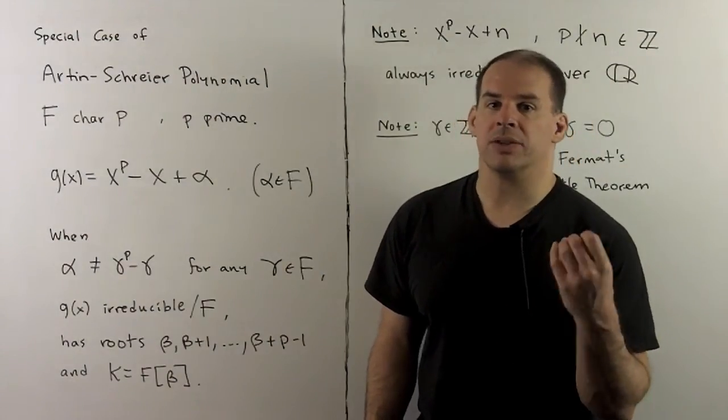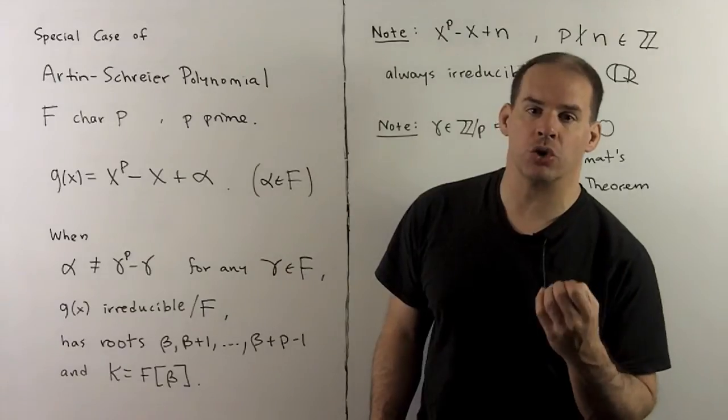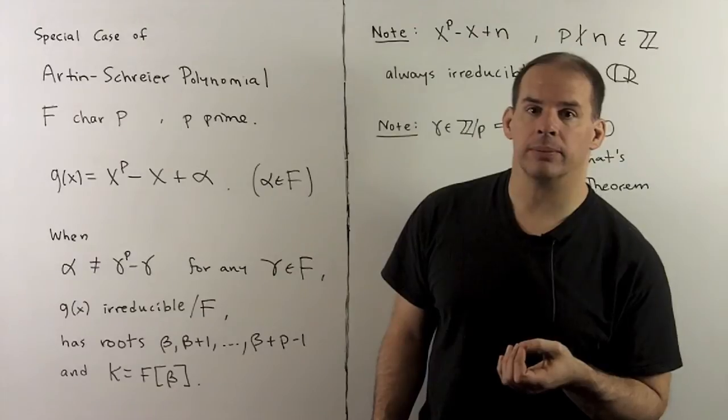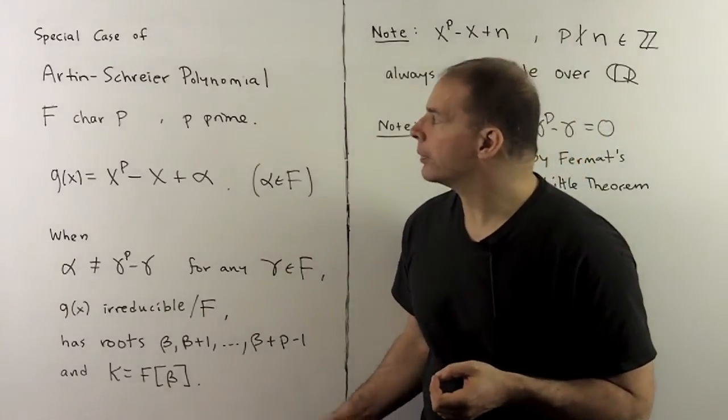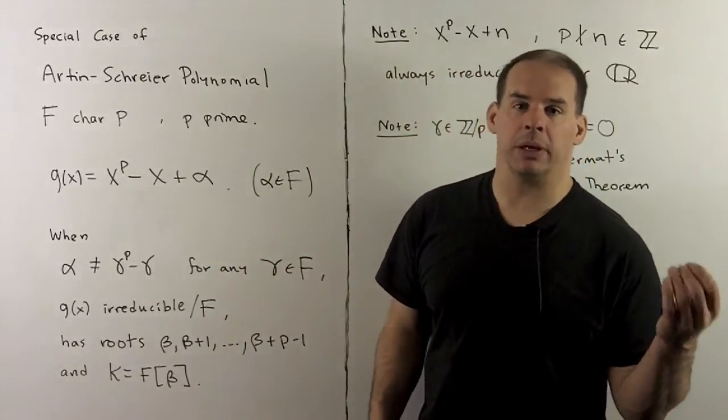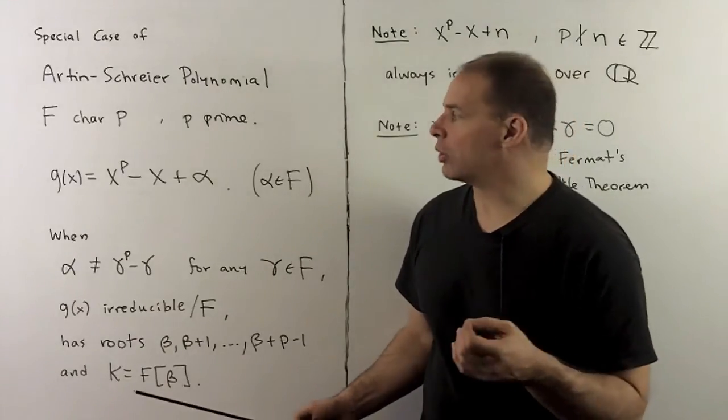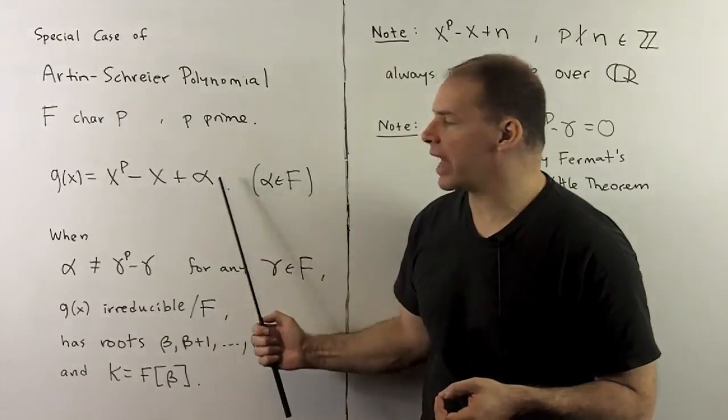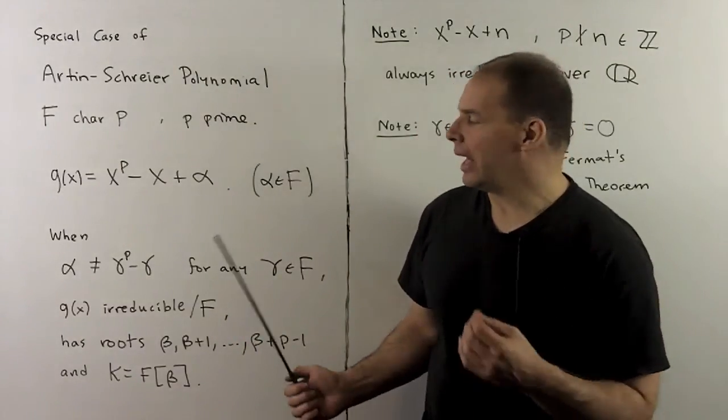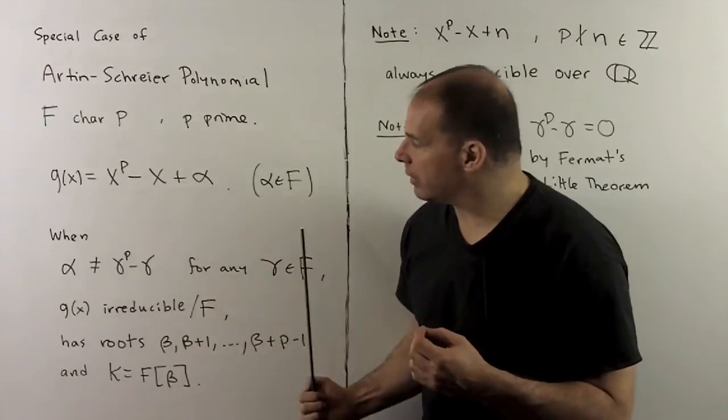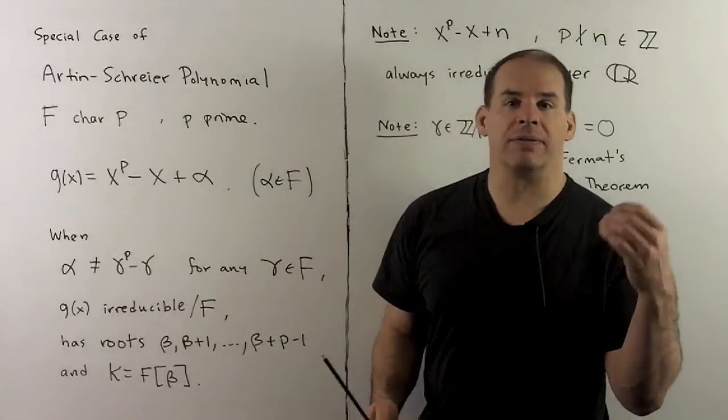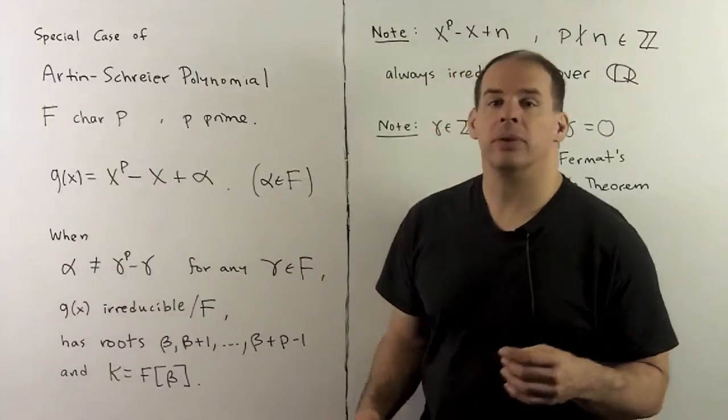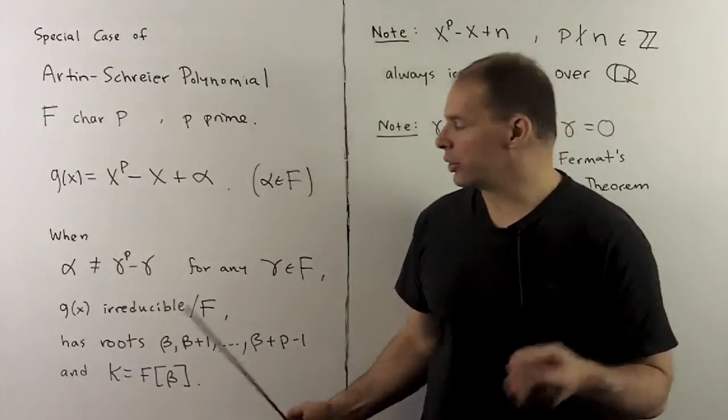What we've been working with is a special case of what we call an Artin-Schreier polynomial. These polynomials play a role in the advanced theory. For the general setup, we'll choose field F, characteristic p with p prime. The general Artin-Schreier polynomial is in the form x to the p minus x plus alpha, where alpha is in F. And by the work we've already done, if alpha is not in the form gamma to the p minus gamma for any gamma in F, then g is irreducible over F.